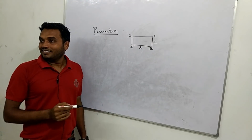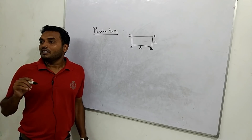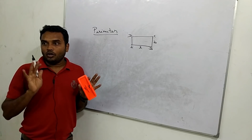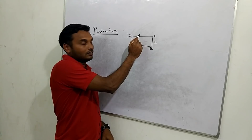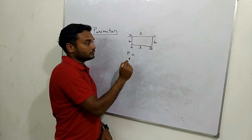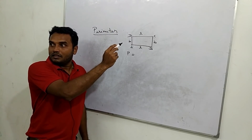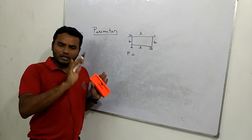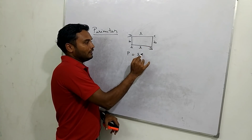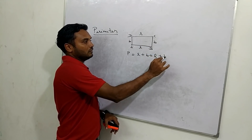That is the total length — outer and total length. This is L, this is B. Perimeter — what is going on? You can add. Perimeter is the outer boundary, complete length: L plus L plus B plus L — that gives the perimeter.